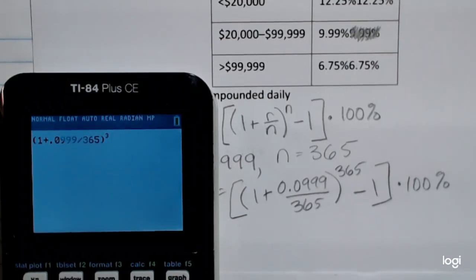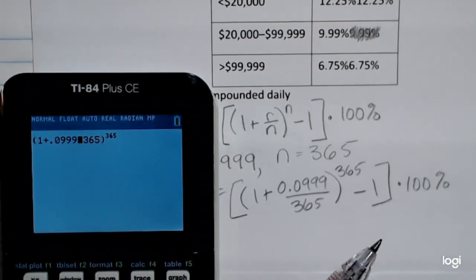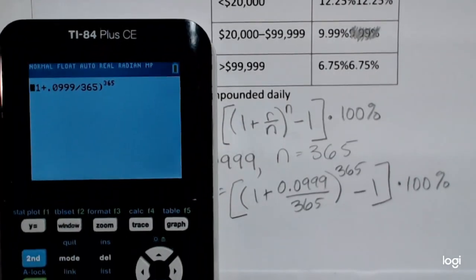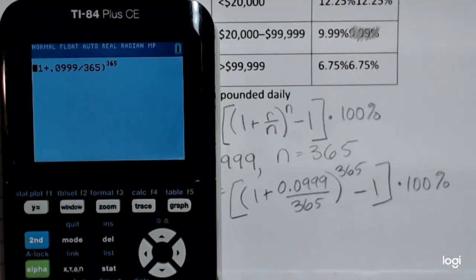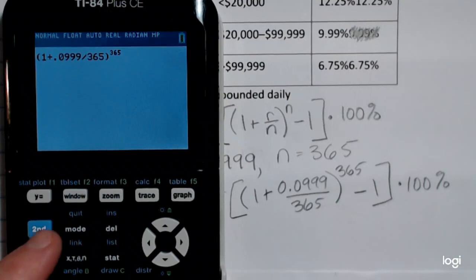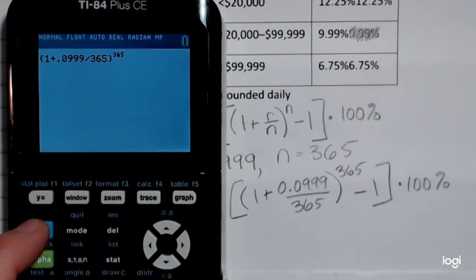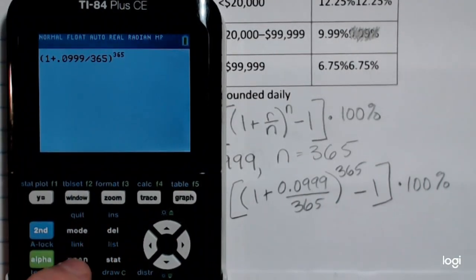That to the 365th power. I forgot the outer set of parentheses, so I'm going to back arrow. I can use my insert key. It's right above the delete. If I press second delete, I can insert that outer set of parentheses.